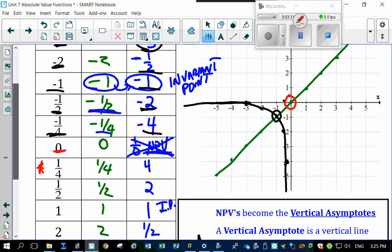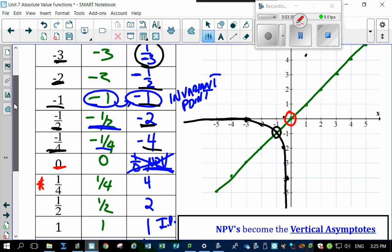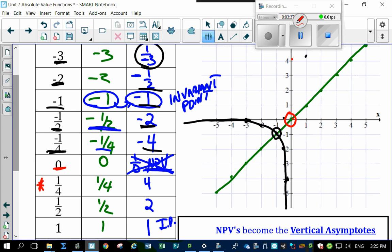We've got a quarter becoming a 4. A quarter becomes 4. So it's going to be way up here. There is a quarter at 4. Then we've got a half at 2. A half at 2, which is about here. There's our invariant point again. 1, 1. Right here. Interesting.